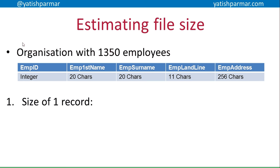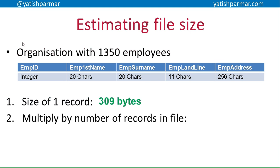First of all, I need to estimate the size of a single record. An integer might be two bytes. First name: 20 characters, so assuming we're using ASCII, that's 20 bytes. Surname: 20 bytes again. Landline: 11 characters — you should know why a telephone number is stored as a string and not as an integer. The employee address follows similarly. Assuming ASCII for those final four fields, it's one byte per character, so adding all of that up gives 309 bytes.